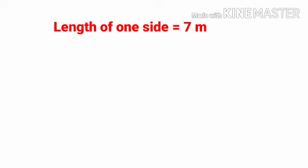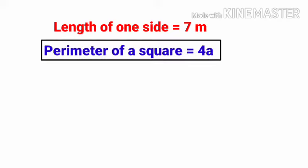Now apply the perimeter formula for a square. Perimeter of a square equals 4a, equals 4 into 7, equals 28 m. Four sevens are 28 m. So perimeter of the square is equal to 28 m.